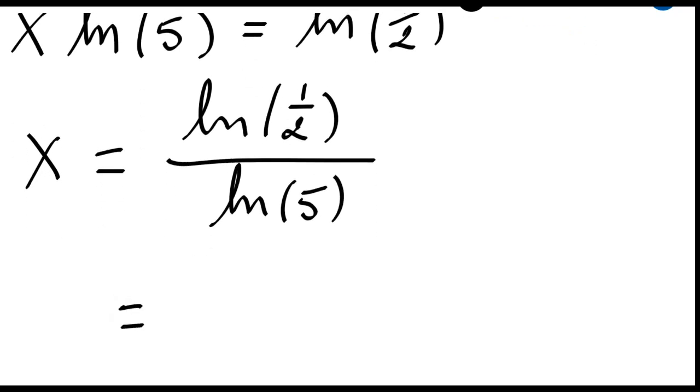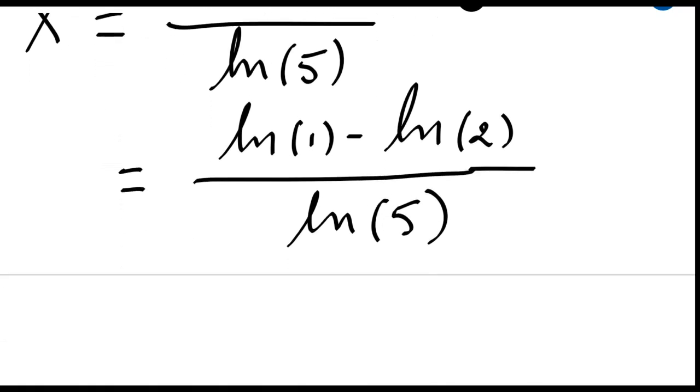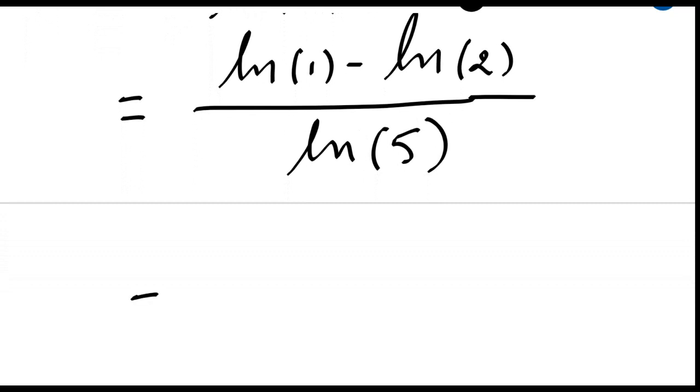This is again using the properties of the ln function. ln of 1 minus ln of 2 divided by ln of 5. Which is, I know ln of 1 is equal to 0, so I will just have here minus ln of 2 divided by ln of 5.